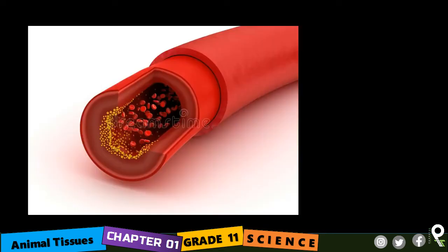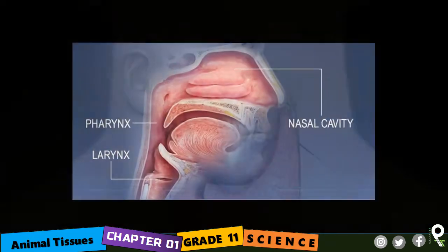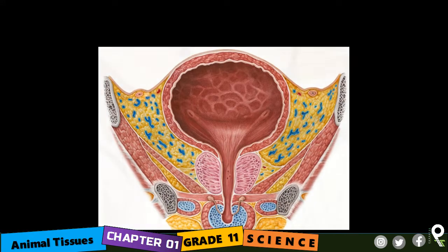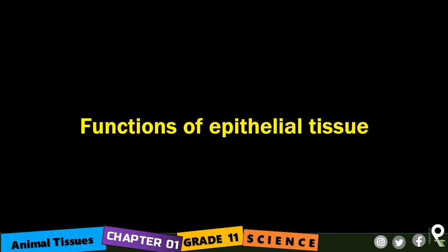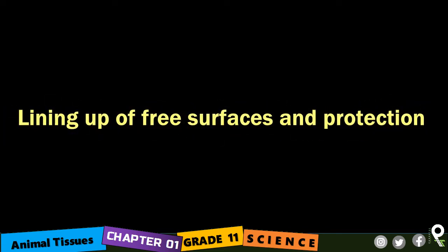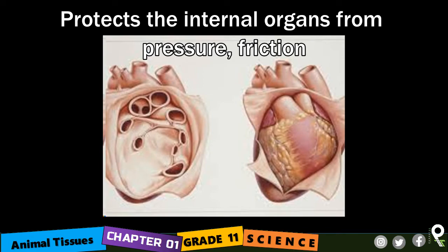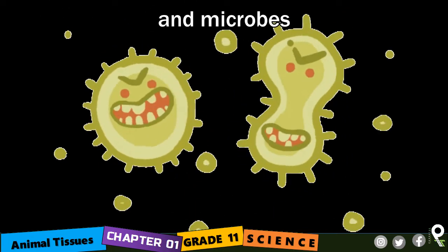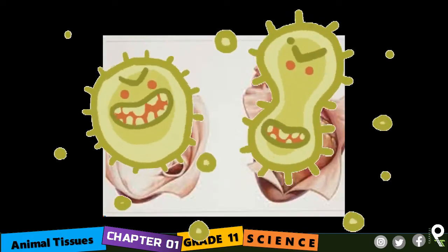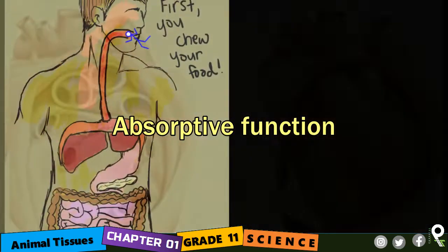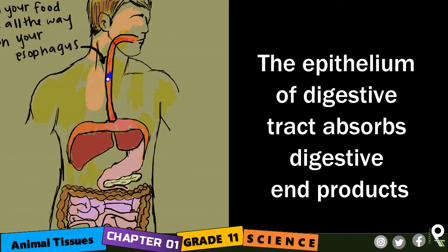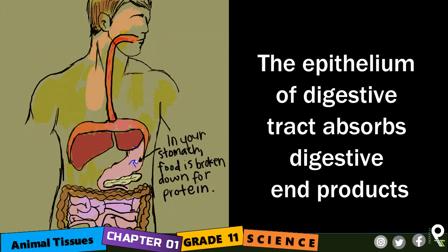The functions of epithelial tissue: first, lining up of free surfaces and protection — it protects the internal organs from pressure, friction, and microbes. So epithelial tissues protect the internal organs of the human body. Another function is the absorptive function — the epithelium of the digestive tract absorbs digestive end products.